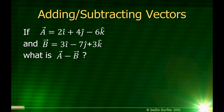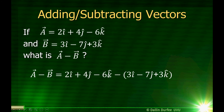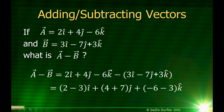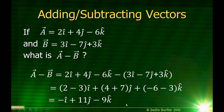Adding and subtracting vectors — we showed how to do that graphically with arrows, but I can do it mathematically as well. If I have vector a equal to 2i hat plus 4j hat minus 6k hat, and vector b equal to 3i hat minus 7j hat plus 3k hat, what is a minus b? I write these algebraic expressions down, expand out the parentheses, then pull together the i, j, and k components. I find that a minus b is negative i hat plus 11j hat minus 9k hat.